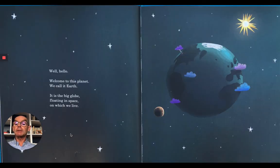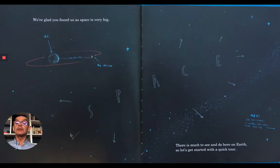Well hello. Welcome to this planet. We call it Earth. It is the big globe floating in space on which we live. You can see the Earth and just next to it the Moon. We're glad you found us as space is very big. It shows planet Earth and the Moon is over 238,000 miles away from the Earth. But then there's lots of space. And it says Mars. Well that's another 140 million miles that way. So that's a long long way. There is much to see and do here on Earth. So let's get started with a quick tour.